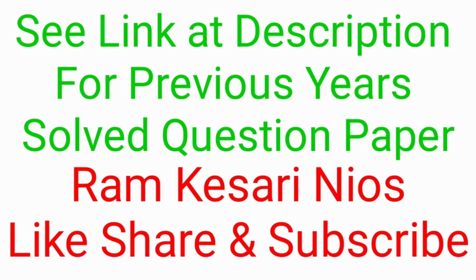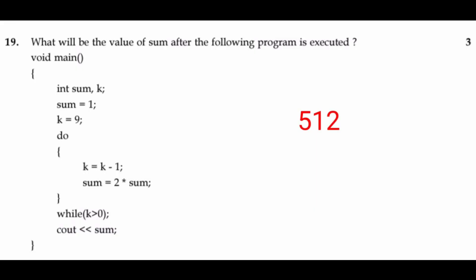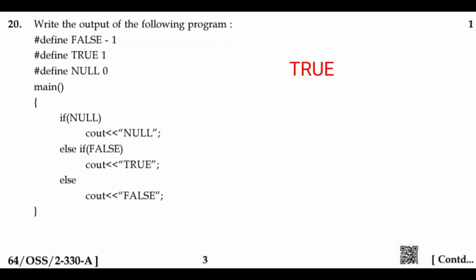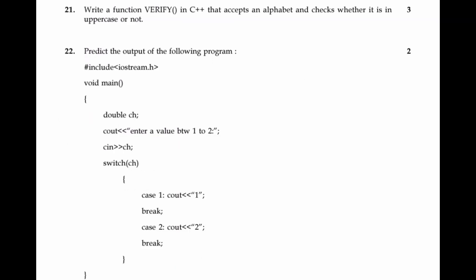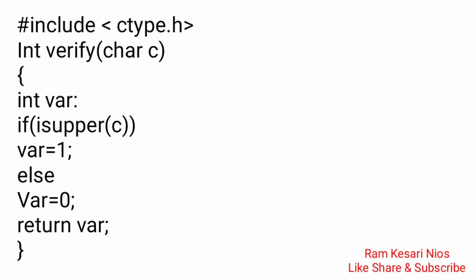See the link in the description for previous year's solved question papers. Question 19: What will be the value of sum after the following program is executed? The answer is 512. Question 20: Write the output of the following program. The output is True. Question 21: Write a function verify in C++ that accepts an alphabet and checks whether it is in uppercase or not. Pause the video and see the answer.